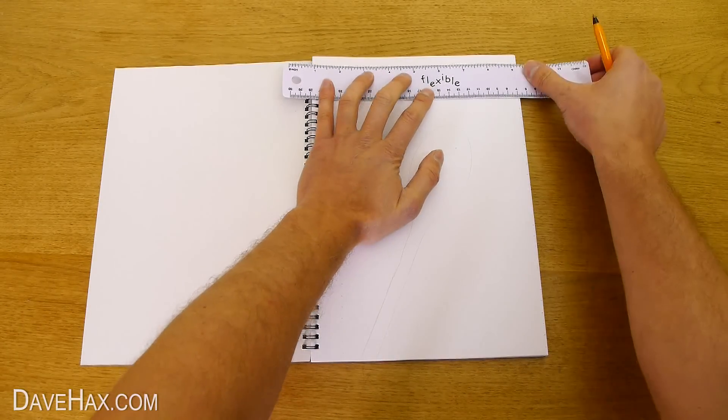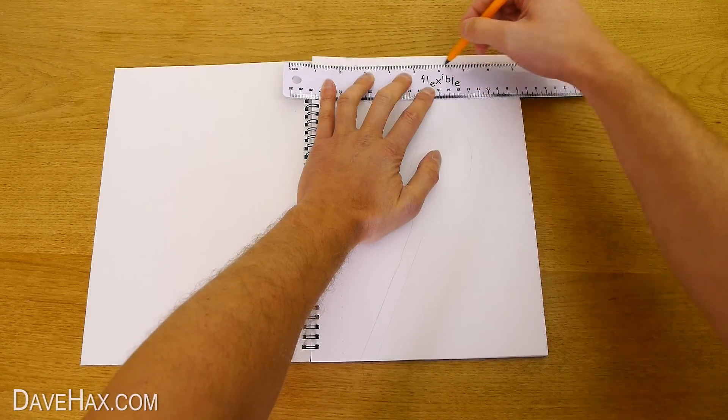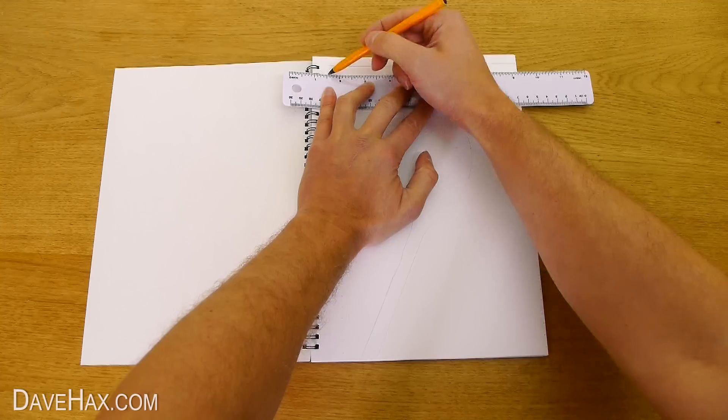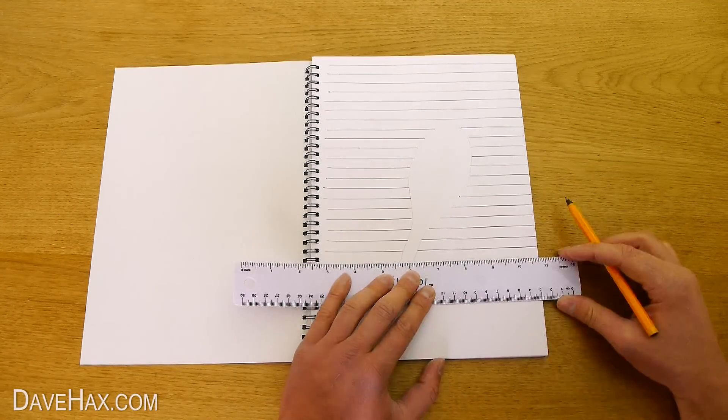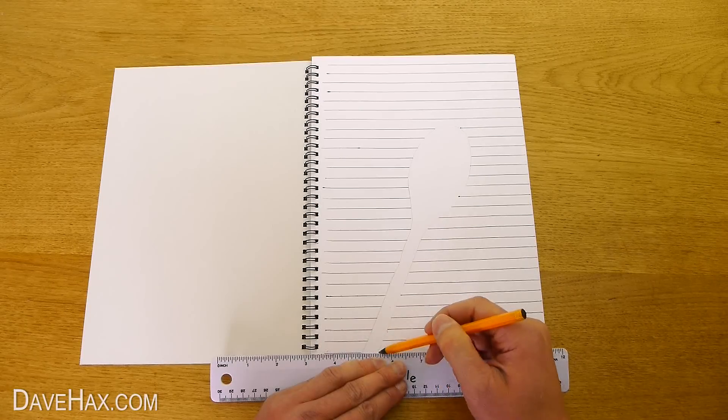Then using a ruler and a pen we're going to draw a line connecting the dots we made earlier, like this. Work your way down the page but don't fill in the outline of the spoon. When you're done it should look like this.